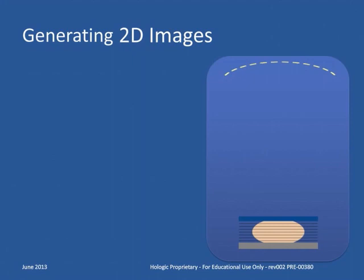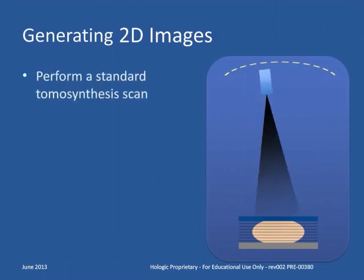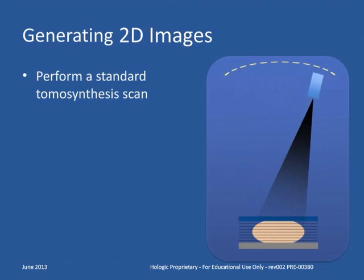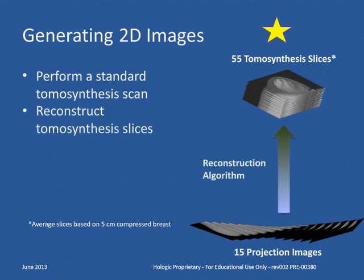So how are the C-View software images generated? The first step to generating a 2D image is to perform the tomosynthesis scan. A standard tomosynthesis scan is performed, taking a series of low-dose exposures from different angles. In the next step, after the acquired scan, the individual projection images will be reconstructed into a series of thin, high-resolution slices.